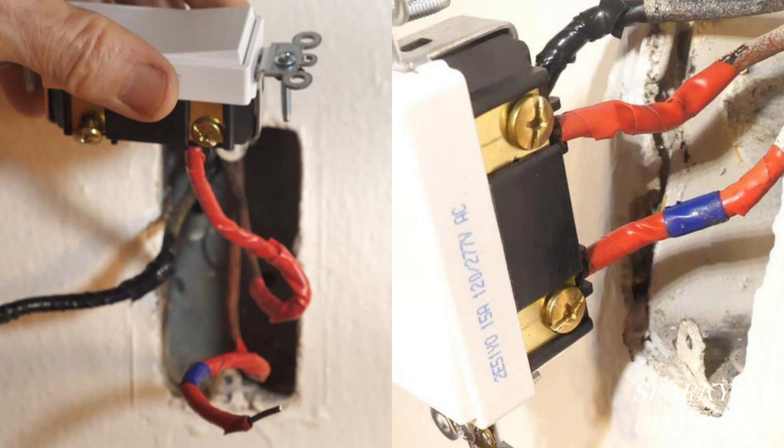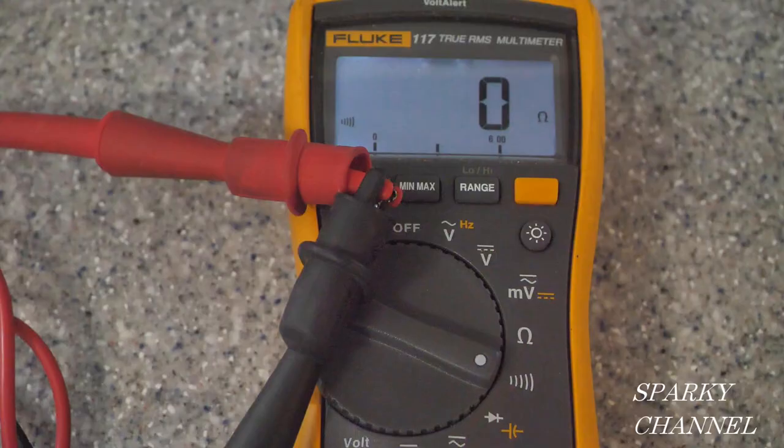I'll put links in my video description for these switches. Now these cost a little more. They're Decora Plus. They have the self-grounding clips and they're commercial grade. I'll also put a link for the meter I used in the video. But like I say, any meter that has continuity will be fine for this particular test.